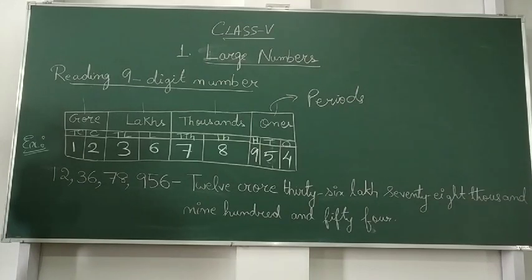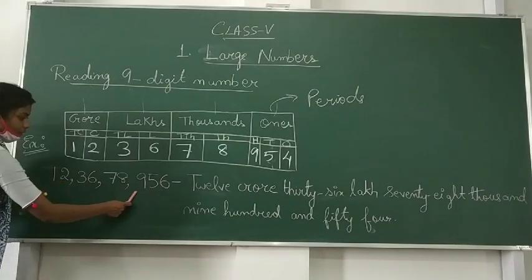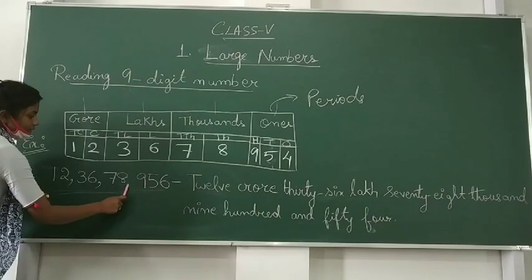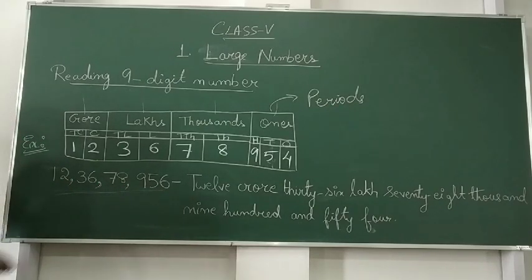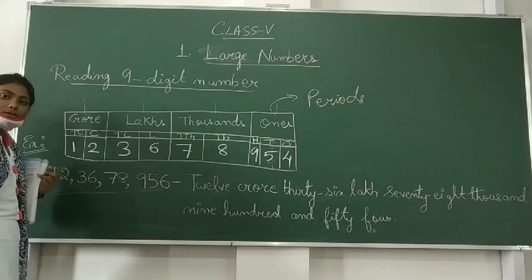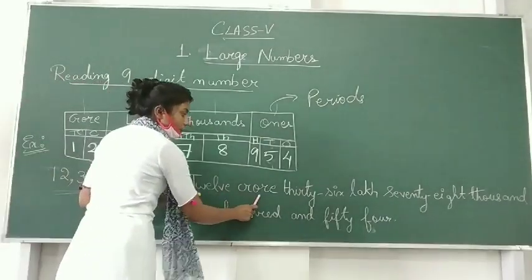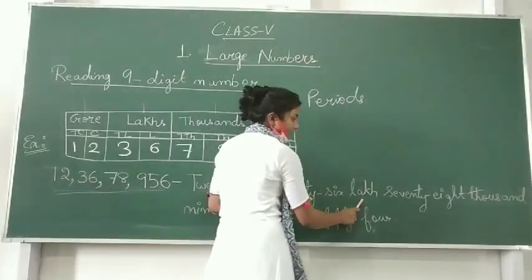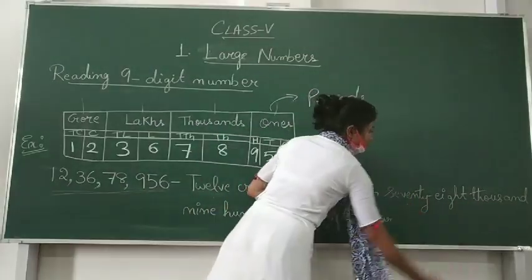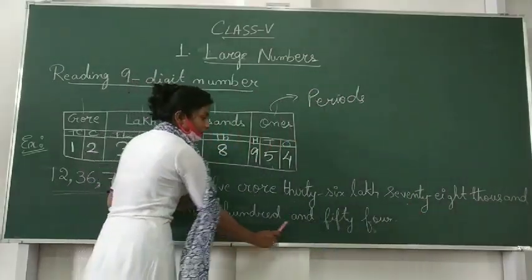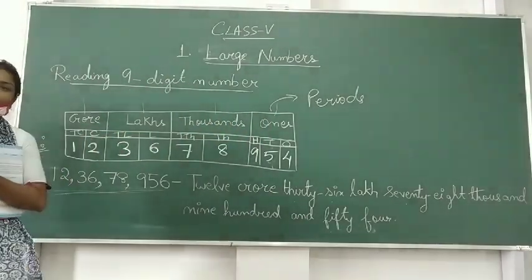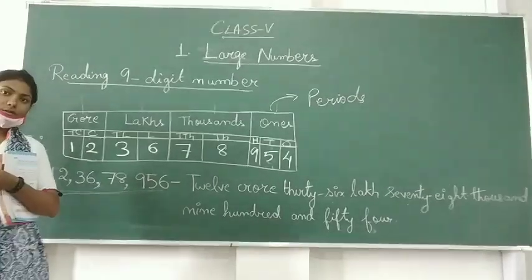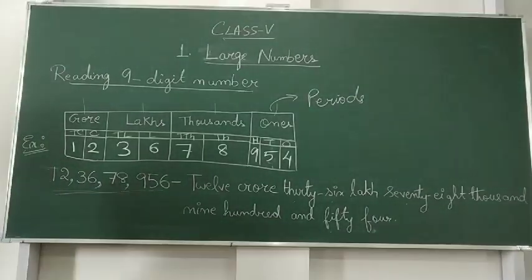Now we have to write the number name. I have marked the periods in the number and given the comma by marking the periods. For example, how you will write: twelve crore, thirty-six lakhs, seventy-eight thousand, nine hundred and fifty-four. In this way you can write the number names. It will be easy if you just put the comma at the periods.